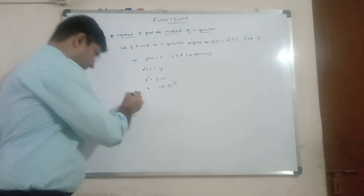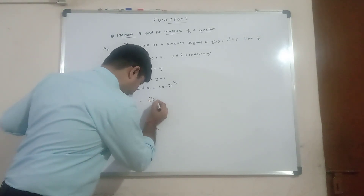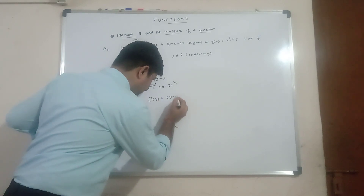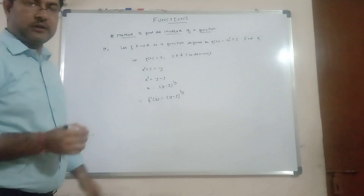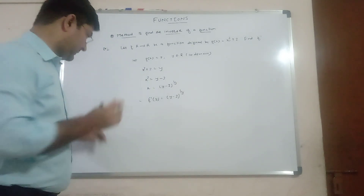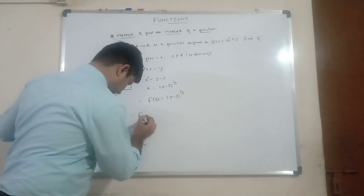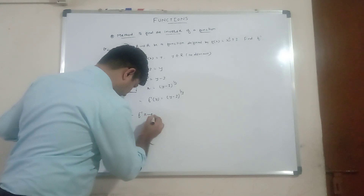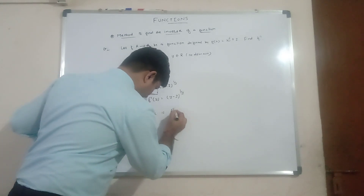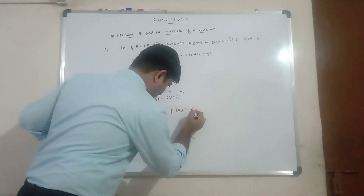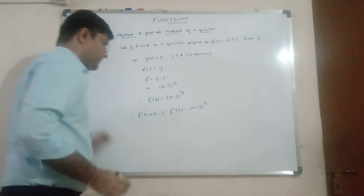Step 3: replace x by f inverse(y). So f inverse(y) = (y − 3)^(1/3). We have got the inverse of the function. Therefore f inverse from R to R is given by f inverse(x) = (x − 3)^(1/3).